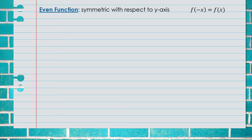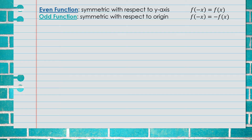The official definition of an even function is that it is symmetric with respect to the y-axis, stated as f(-x) = f(x). The definition of an odd function is that it is symmetric with respect to the origin, meaning f(-x) = -f(x). Next, we will draw a diagram to hopefully make more sense of this.